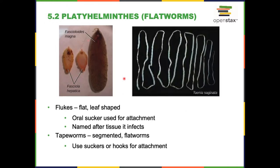The platyhelminthes are the flatworms, which come in two forms: flukes and tapeworms. Flukes are flat, leaf-shaped with an oral sucker used for attachment, and typically named after the tissue they infect — a lung fluke infects the lung, a heart fluke infects the heart. Tapeworms are segmented flatworms — a little different in that they're segmented, with each segment able to exist somewhat independently, so if you cut them they can typically regrow. Just like flukes, they use suckers and sometimes hooks for attachment, hooking into your intestines.